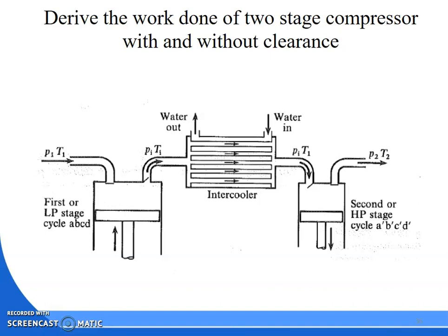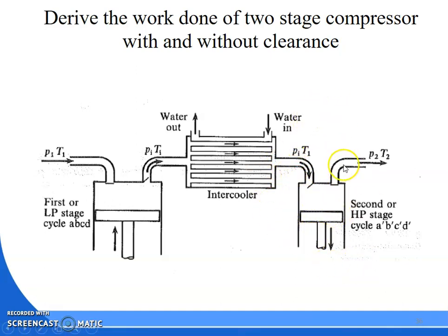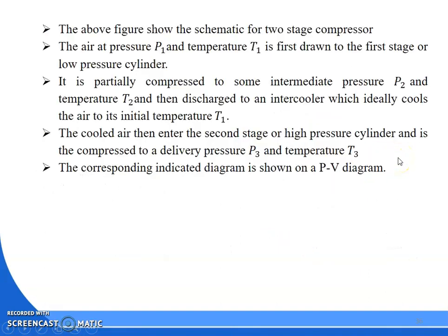To reduce the work input, the high-pressure, high-temperature air from the first stage of compression — the low-pressure stage — is sent to the intercooler. Here it is cooled at constant pressure: the pressure is maintained, but the temperature is decreased back to the initial temperature T1. So with intermediate pressure and initial temperature T1, the air enters the high-pressure cylinder, where it is compressed and delivered at final pressure P3 and temperature T2.